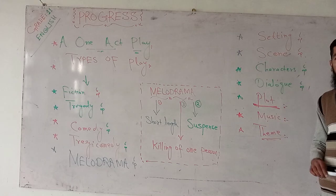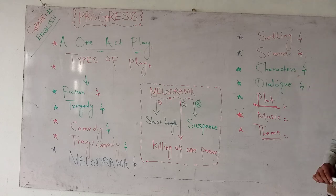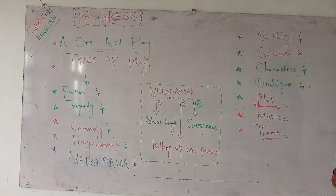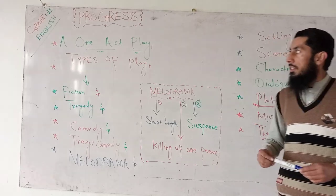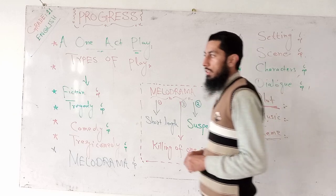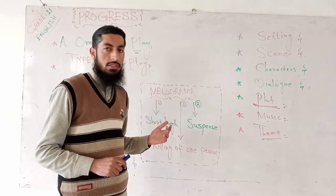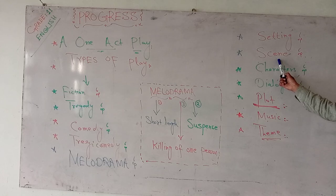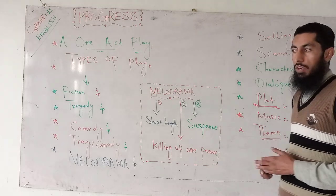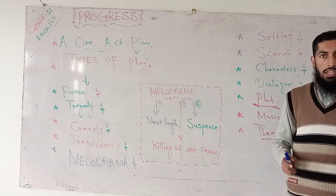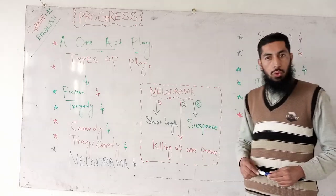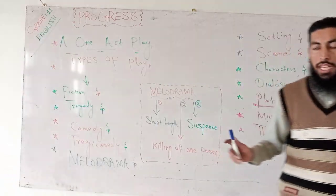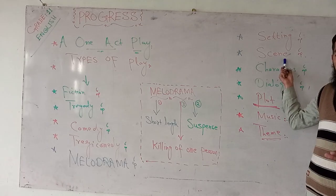Now let's come to some structural elements of the play. The first structural element is setting — setting means time and place. When there is a play, drama, or novel, some place and some time will be there: season, time, etc. So time and place are called setting. Next is scene — the view you see when a drama or play is staged and the curtain falls. It could be a room, a playground, a market, a plaza, or anywhere. The view of the play is called the scene, where the actors perform.